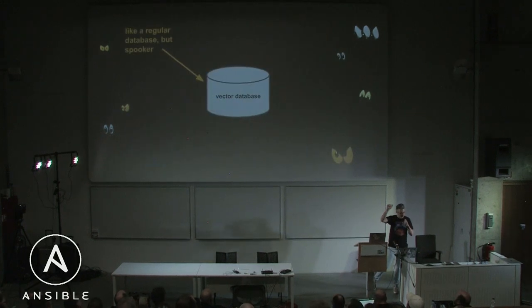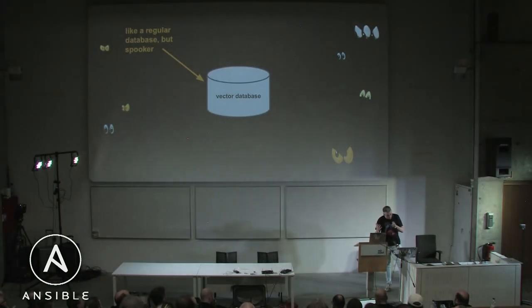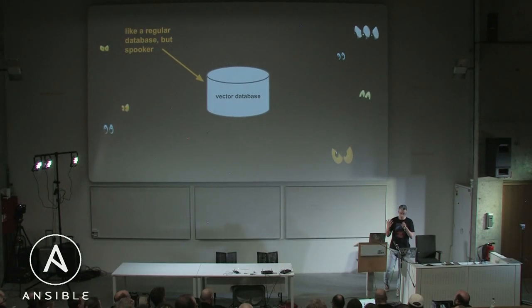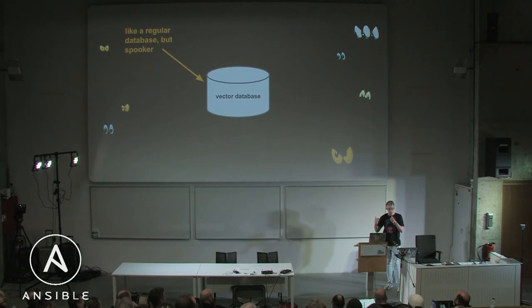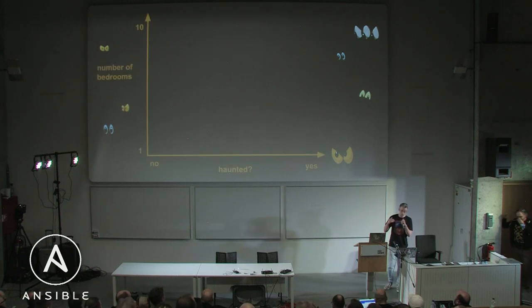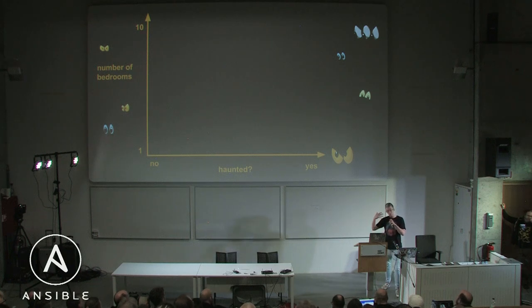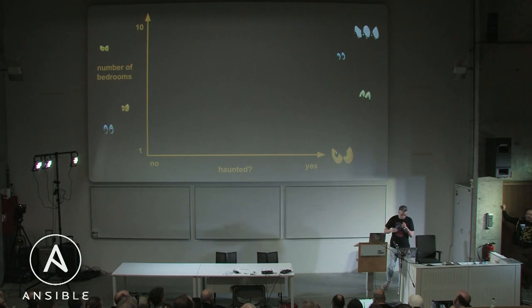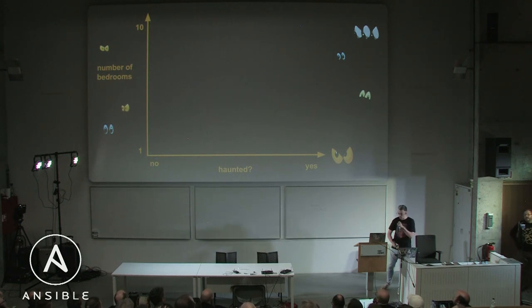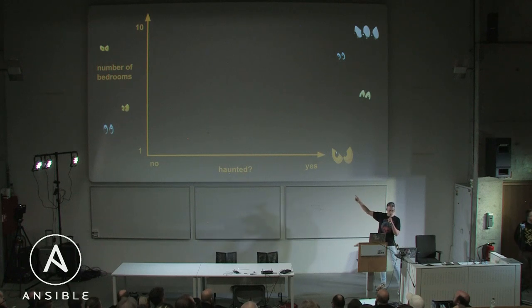We're going to be talking about vector databases and LLMs. Vector databases, as we heard before, are a type of database that doesn't have a query language. Instead we query using natural language and get results in a way that understands context. It does this by taking your text and converting it into numbers, which is called a vector embedding. To visualize this, we've created a really simple vector embedding model for a real estate database that outputs two numbers: the number of bedrooms and the likelihood to be haunted.